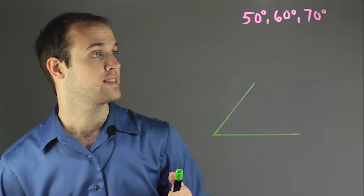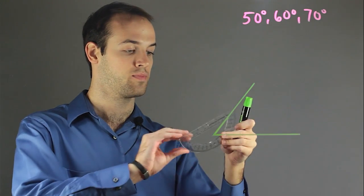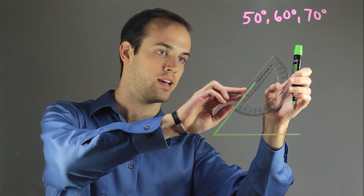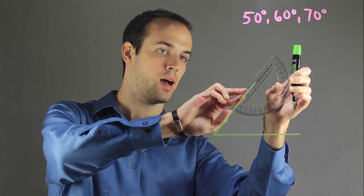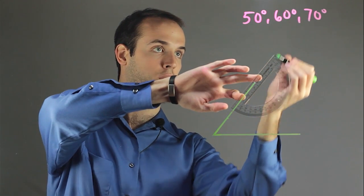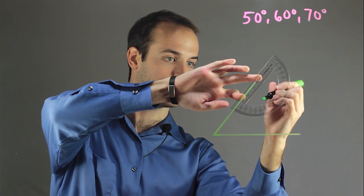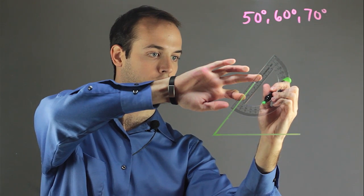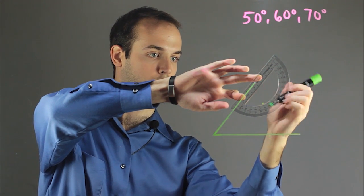So our next angle is going to be 60 degrees. So again, this time I'm going to flip the protractor upside down like this. Get the point lined up right at the base of the line that I drew. And I want to find a 60 degree angle, which looks like it's going to be right about here. So I draw a little point.